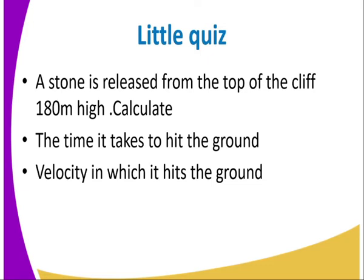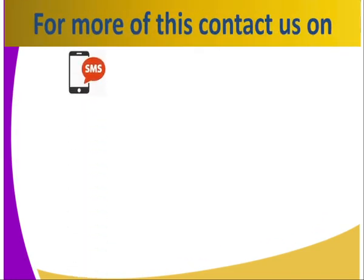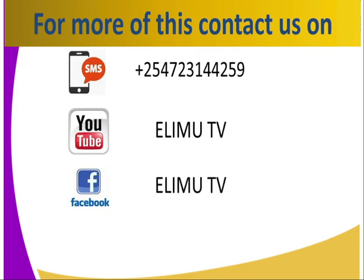Let's attempt the following retro quiz. A stone is released from the top of a cliff 180 meters high. Calculate: the time it takes to hit the ground, and the velocity with which it hits the ground. You can refer to Secondary Physics Students Book Three, or send us a text through the numbers on your screen, or visit our YouTube channel at Elimu TV, our Facebook page Elimu TV, or tweet us at Elimu TV.